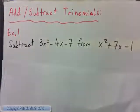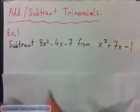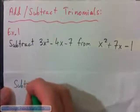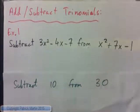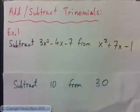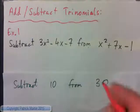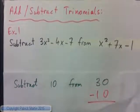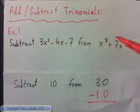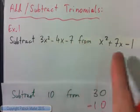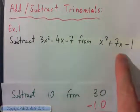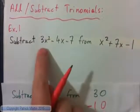So what does this mean? What would you do if I gave you just a couple of simple numbers like this — subtract 10 from 30? You would start with the 30 and subtract the 10, right? So if we say subtract this thing from this thing, this guy is going to be subtracted from the other one. So he's subtracted from there.